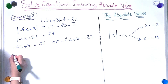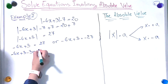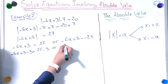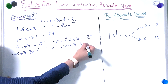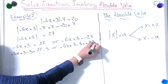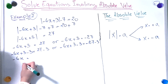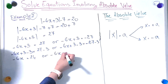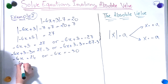So minus 6x plus 3 equals 27, or minus 6x plus 3 equals minus 27. Now we subtract 3 from both sides. So minus 6x equals 24, or minus 6x equals minus 30.